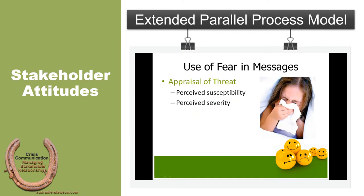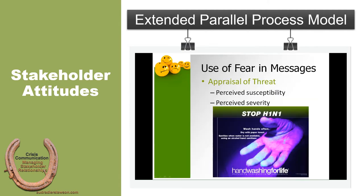The second component is how severe that threat is going to be. We can recognize that something could affect us, but the question becomes how much. During cold and flu season, we know we could get sick when we're out and about. Even if I think I'm susceptible — if I've been working a lot, sleeping too little — I may realize my immune system is compromised. But if it's just a cold, just an inconvenience, we may not worry too much. On the other hand, if we think we're going to die — hand washing for life. So how much fear is induced matters: are we susceptible, and how severe is the threat?